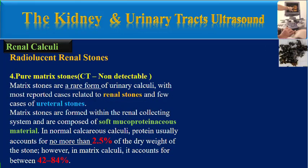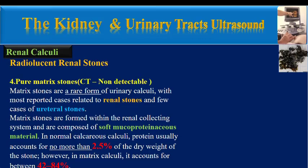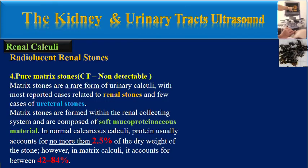The last of the radiolucent CT non-detectable renal stones are pure matrix stones. Matrix stones are a rare form of urinary calculi, with most reported cases related to renal stones and few cases of ureteral stones. Matrix stones form within the renal collecting system and are composed of soft mucoproteinaceous material. In normal calcareous calculi, protein usually accounts for no more than 2.5% of the dry weight of the stone.